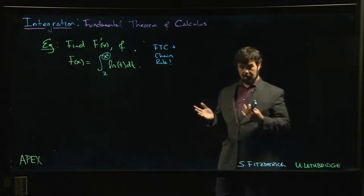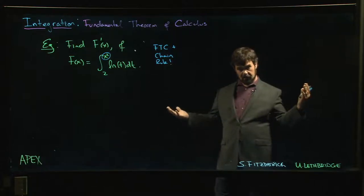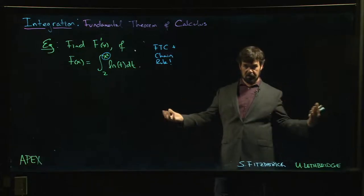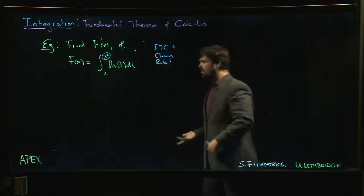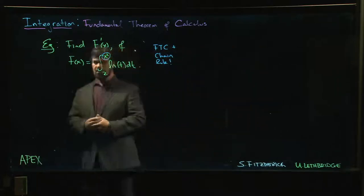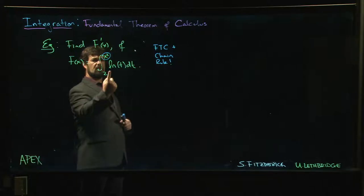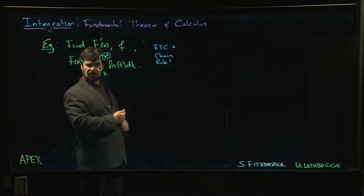Now, the first thing that you might be tempted to do here is apply the second part of the fundamental theorem, right? Get the antiderivative, work this out, plug in the limits, plug in the x squared, plug in the 2 to get the function, and then take the derivative as usual.